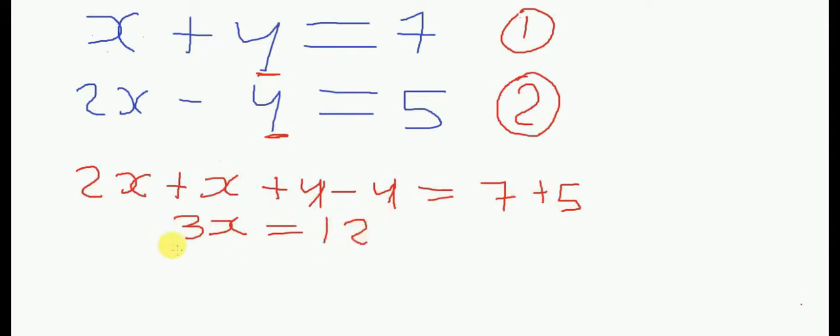I am going to divide both sides by 3. 3 cancels this 3. 3 into 3 goes 1 time. 3 into 12 goes 4 times.